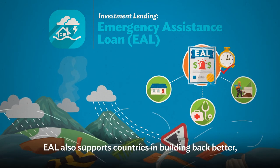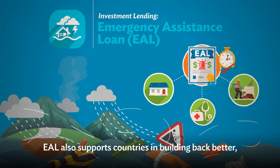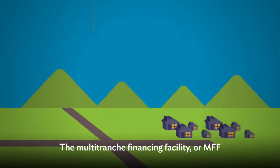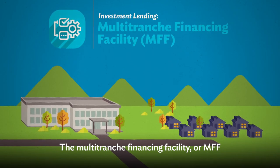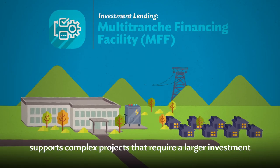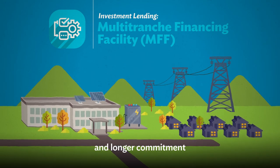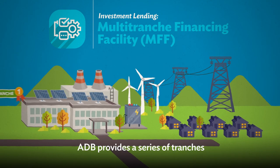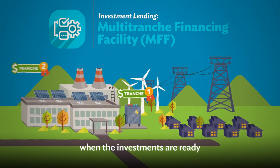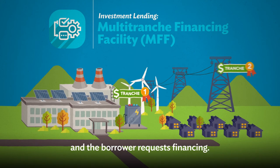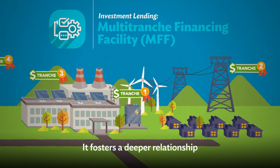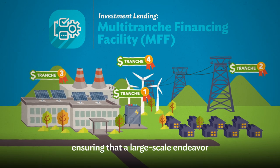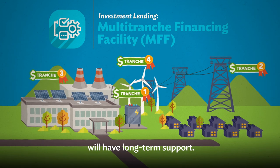The EAL also supports countries in building back better, improving resilience to future emergencies. The Multi-Tranche Financing Facility, or MFF, supports complex projects that require a larger investment and longer commitment than a regular project loan could provide. ADB provides a series of tranches when the investments are ready and the borrower requests financing. It fosters a deeper relationship between ADB and the borrower, ensuring that the large-scale endeavor will have long-term support.